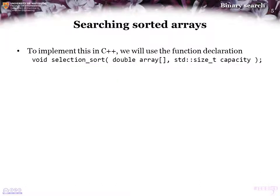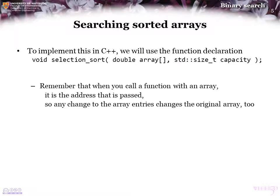To implement this in C++, we will use the following function declaration. The name of the function is SelectionSort. The first argument is Array, and the second argument is its Capacity. This function will not return anything, so its return type is declared to be void. Remember that when an array is passed to a function, it is the address of the first entry of the array that is passed. So any change to the entries of the array in the function itself will affect the original array as well — we will be sorting the array that was passed to this function.